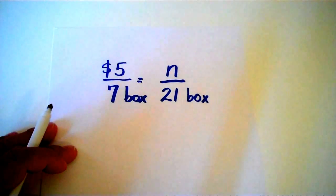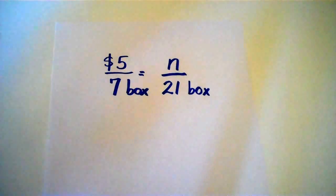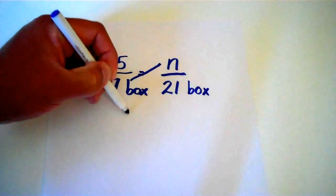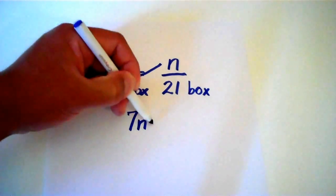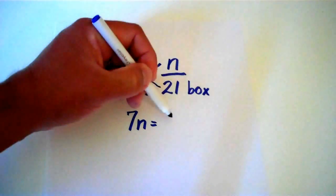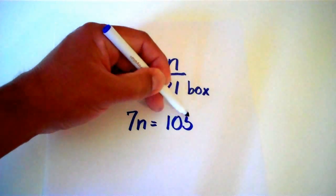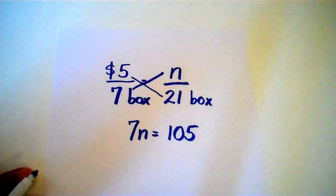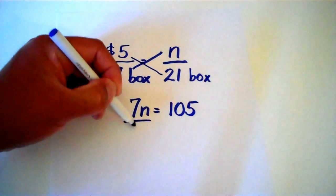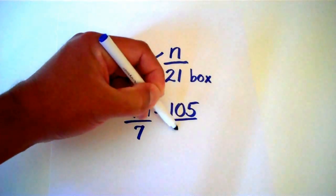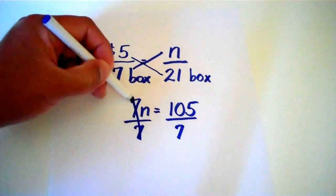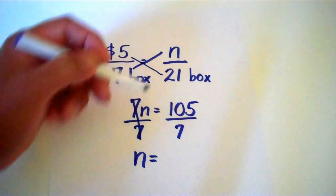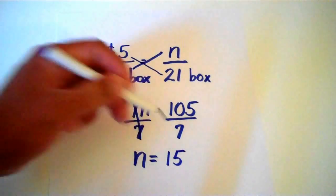Let me just show you how that would work. We would use cross products in this case where you would multiply 7 times N and that would be 7N. And 21 times 5 is 105. So we would solve that like a regular equation where we would divide both sides by 7. These 7s would cancel out and 7 into 105 is 15.